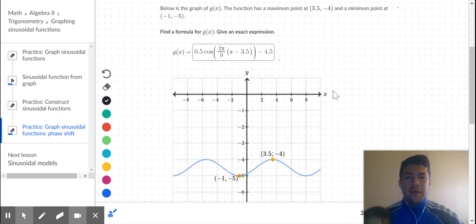The first thing I pick up on is the midline. If my maximum is at negative 4 and my minimum is negative 5, then my midline is directly in between. So the midline is negative 4.5. That has to be the easiest part.